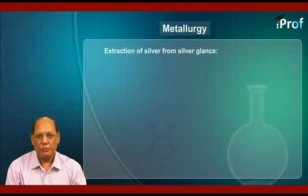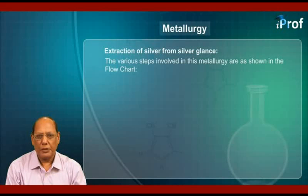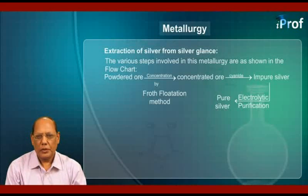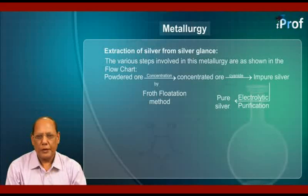Extraction of silver from silver glance: the various steps involved in the metallurgy are as shown in the flowchart. Powdered ore is first concentrated by the froth flotation method so as to get concentrated ore. Then it is subjected to cyanide treatment, where we get impure silver, which is finally subjected to electrolytic purification so as to get pure silver.